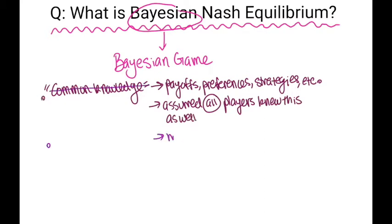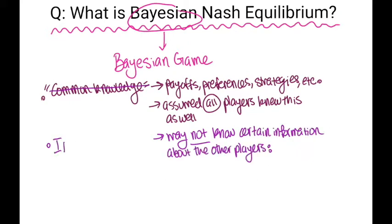However, when players may or may not know certain information about the other players, a game is said to have incomplete information, which is what occurs in a Bayesian game.